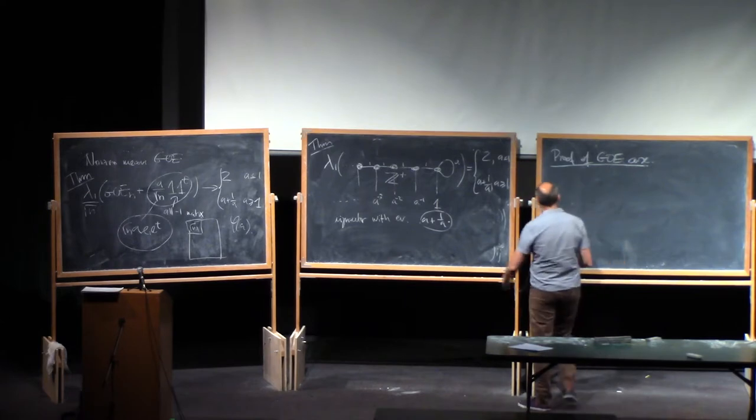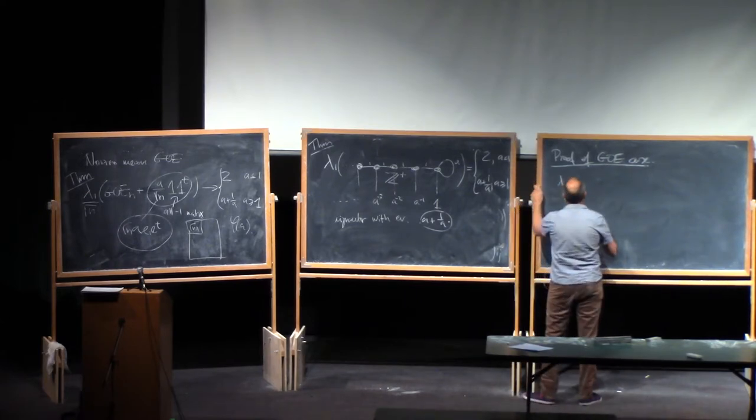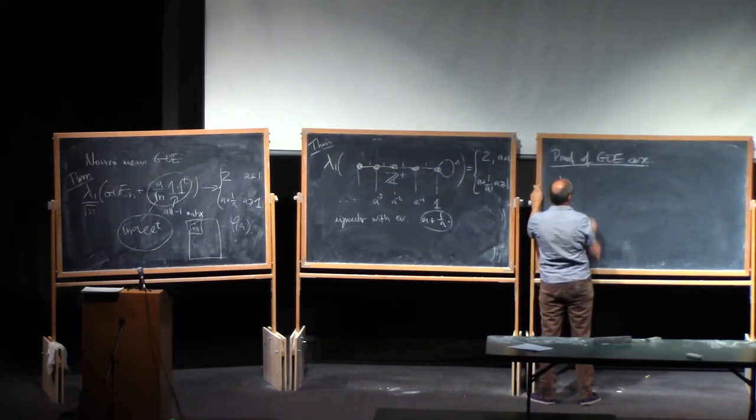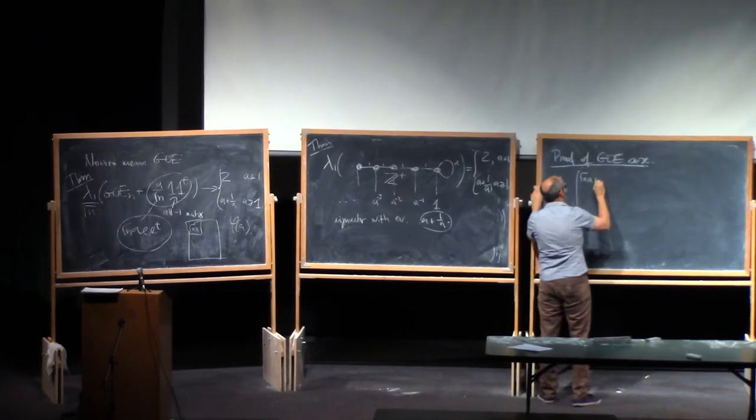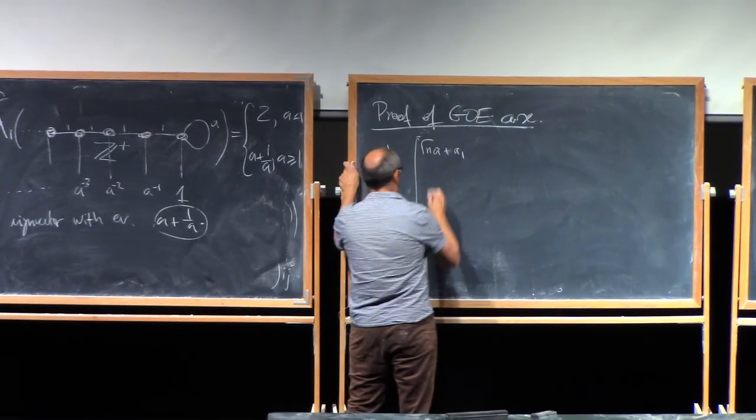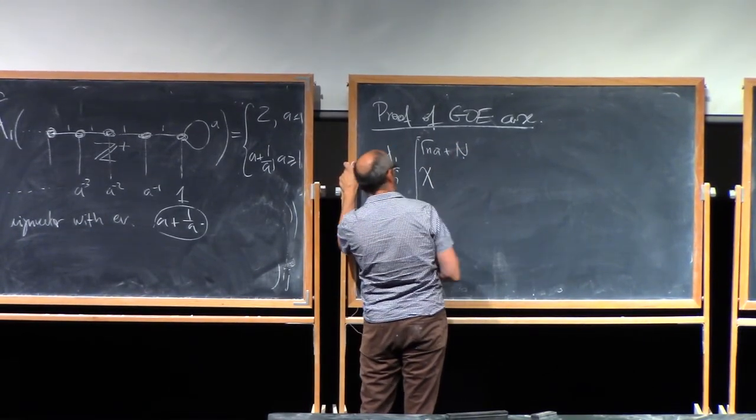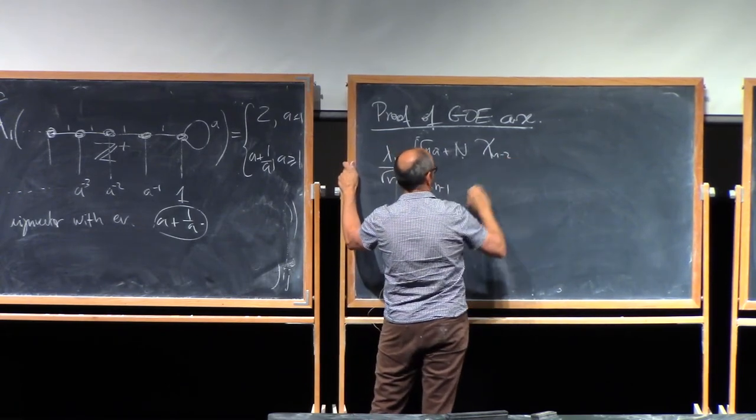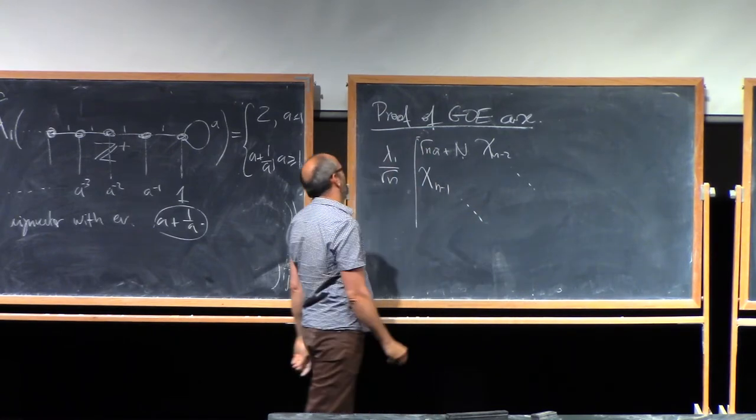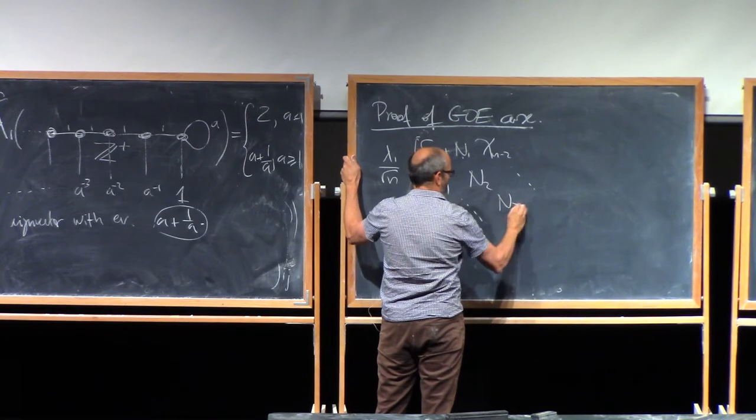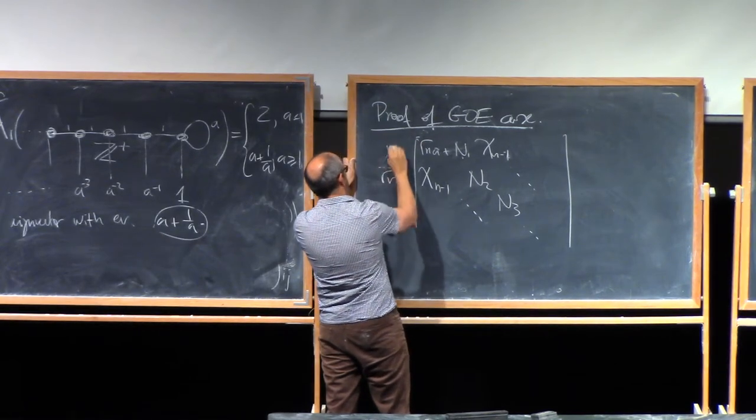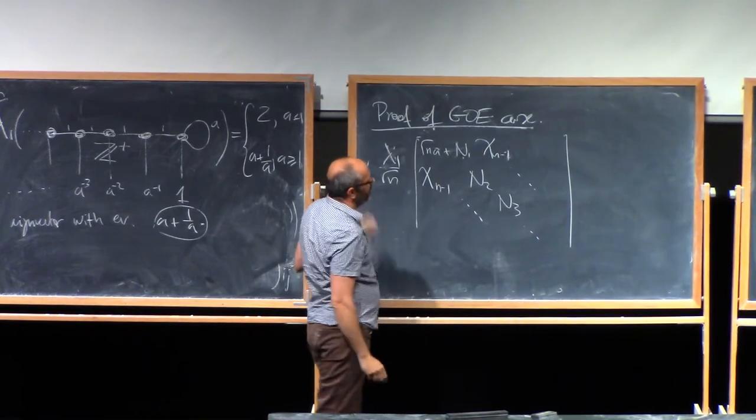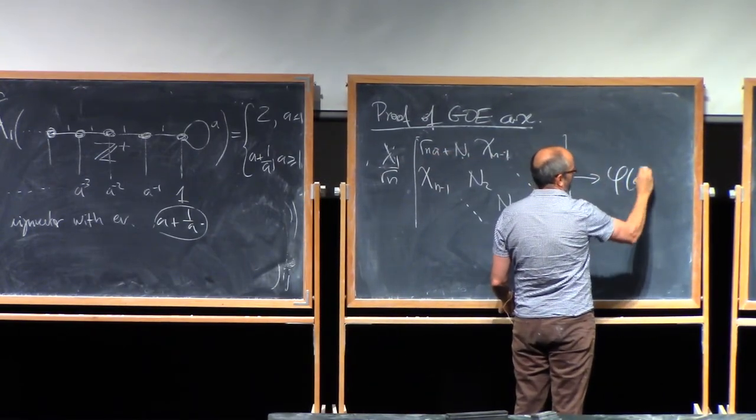So we get the lambda 1 of this Jacobi matrix, where you have square root of n A. I guess there is an A and then there is an A1. So sorry about that. And then you have this chi. Or maybe put here a normal. This is chi n minus 1. Chi n minus 2. Here you just have a normal again. Chi n minus 1 here. Sorry. So it's 1 over root N. Lambda 1 of this over root N. Right? So you need to show that this converges to phi A in probability.